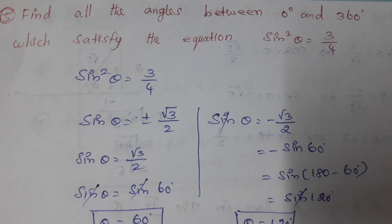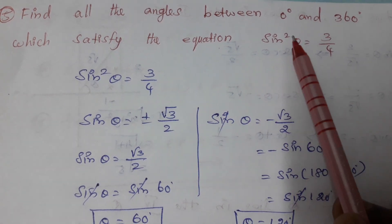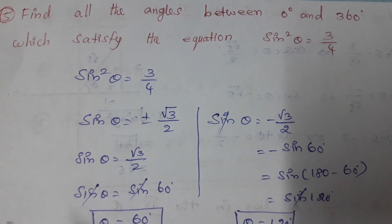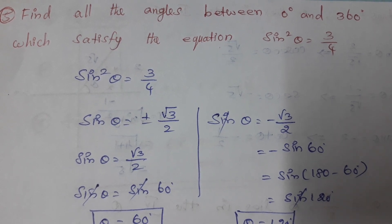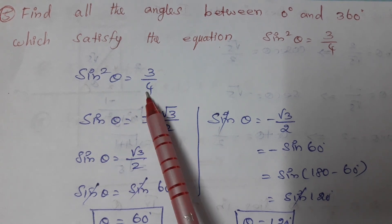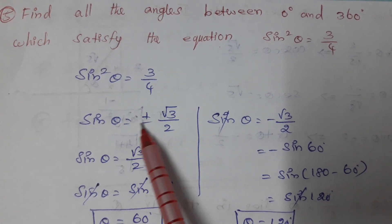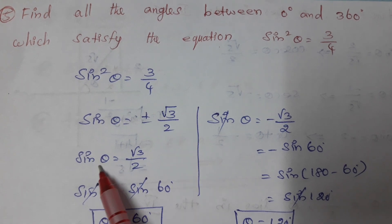Next question: find all angles between 0° and 360° which satisfy the equation sin²θ = 3/4. So sin²θ = 3/4, which gives sinθ = ±√3/2.